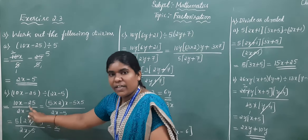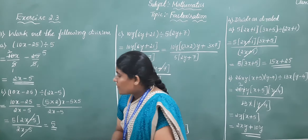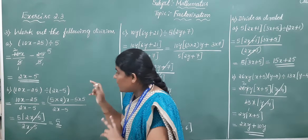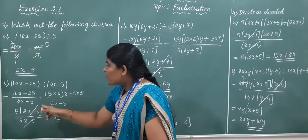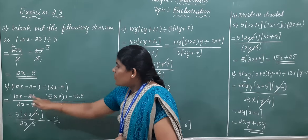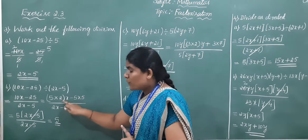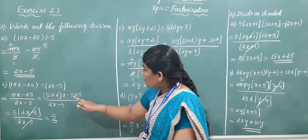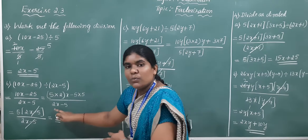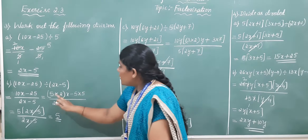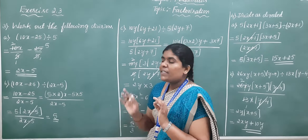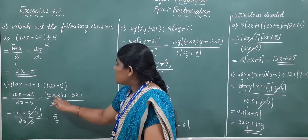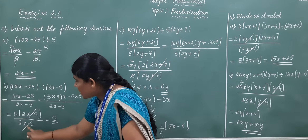The second problem: 10x minus 25 divided by 2x minus 5. Observe carefully — the denominator is 2x minus 5. To factor the numerator, ask: using which table does 2x come out? Using 5. So 10x is written as 5 into 2x, and 25 is 5 fives are 25. We write: 5 into (2x minus 5) divided by (2x minus 5). Taking 5 outside the bracket, the remaining terms give 2x minus 5 in both numerator and denominator.